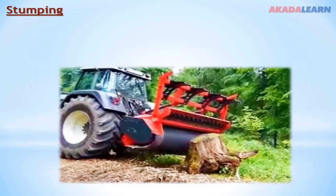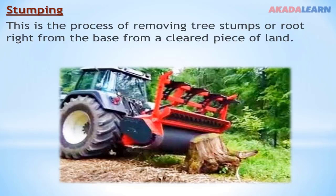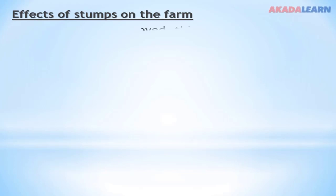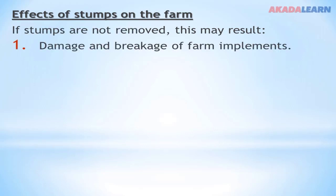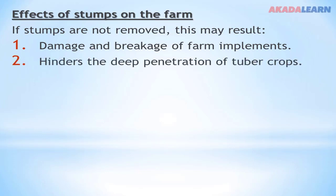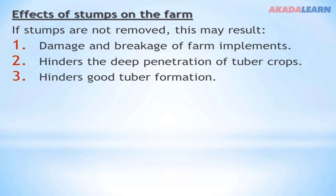Stomping. Stomping is the process of removing tree stumps or roots right from the base from a cleared piece of land. A stump is the part of a tree left protruding from the ground after the tree has fallen or has been felled. The effects of stumps on the farmland: if stumps are left, they can cause damage and breakage of farm implements. Stumps can also hinder the deep penetration of tuber crops and hinder good tuber formation.